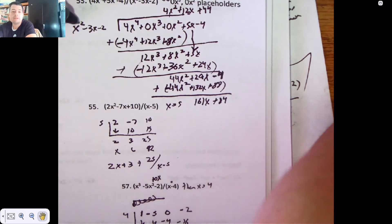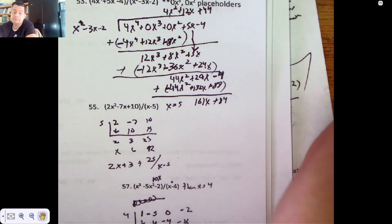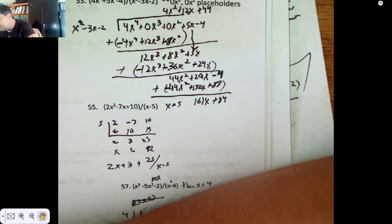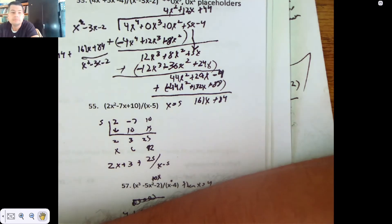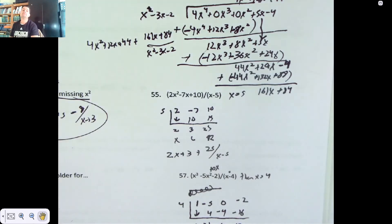And I can't multiply x squared by anything with a positive x point to become 161x, so I'm done. So, this is 4x squared plus 12x plus 44 plus 161x plus 84 pieces of x squared minus 3x minus 2. Kind of an ugly answer. That's long division. It's not supposed to be pretty.